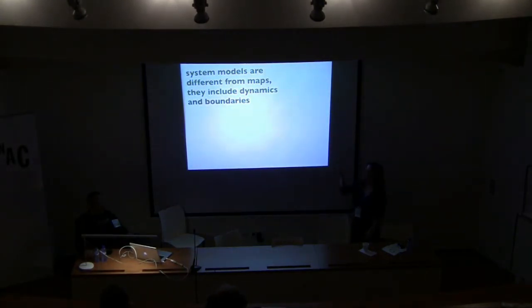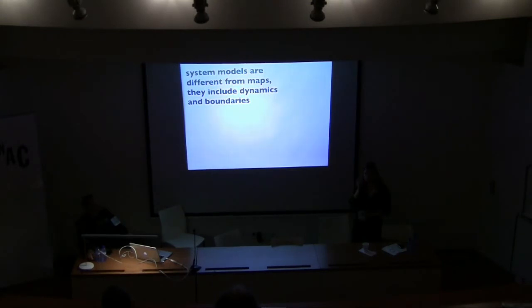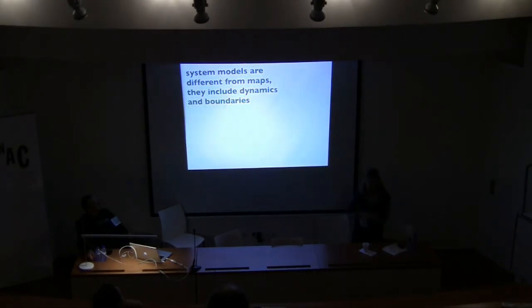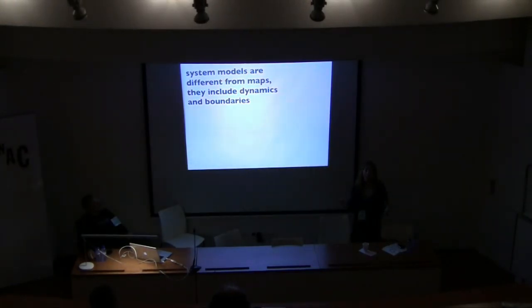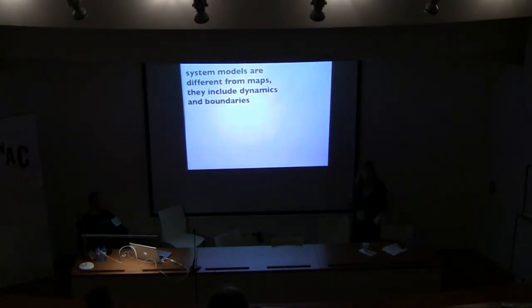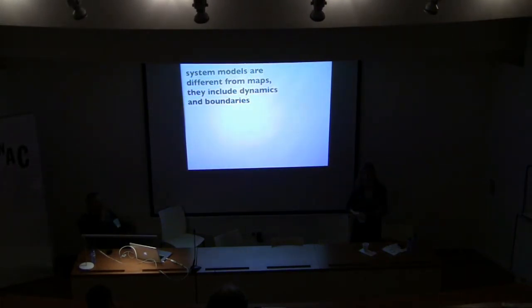I actually like to draw out systems that I work on. A system in this case could be a technology system like a network, or it could be the input and output of a product or an organization. The difference between a system model and a system map is that a map is kind of fixed. You've all seen network diagrams that are frustrating because they don't tell you anything about how components interact, how you expect traffic to flow, or what behaviors would be allowed versus prohibited. System models are different from maps because they include some understanding of what the dynamics of the system are.